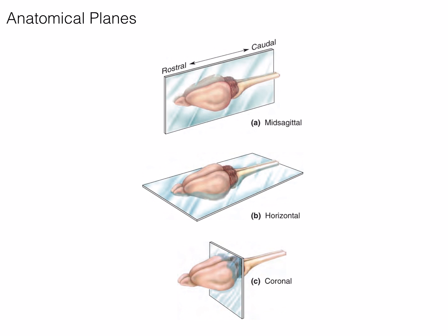A horizontal plane bisects the brain from anterior to posterior, and left to right, creating a superior and inferior portion.